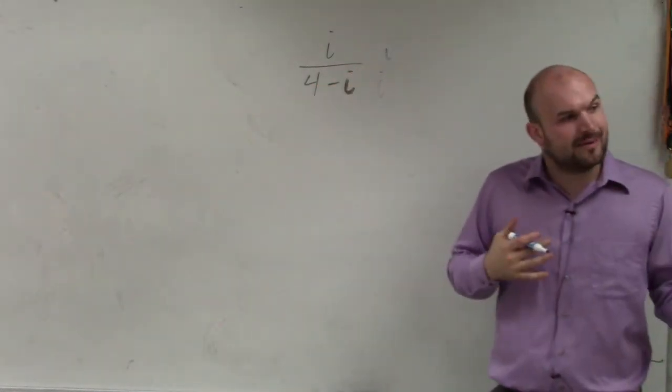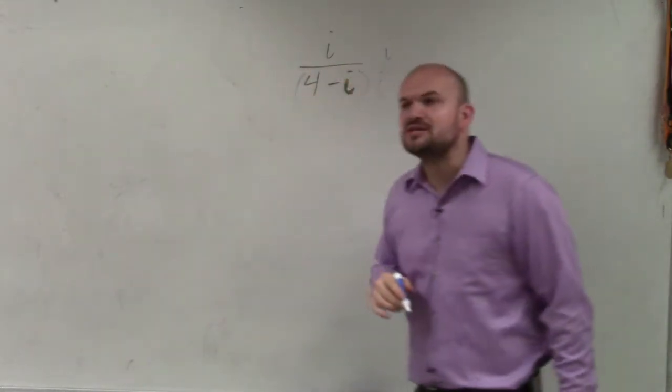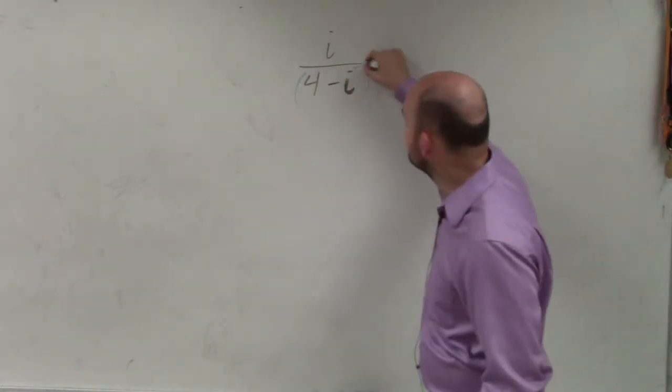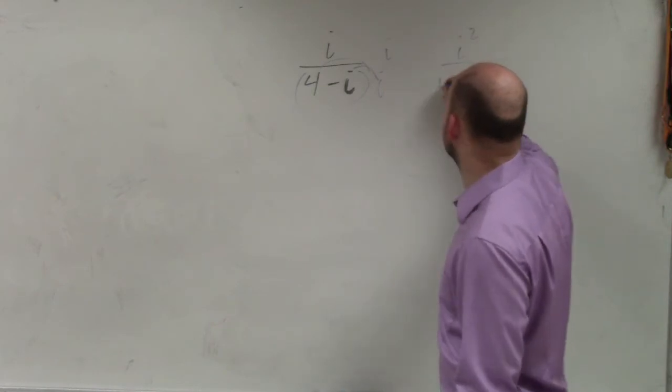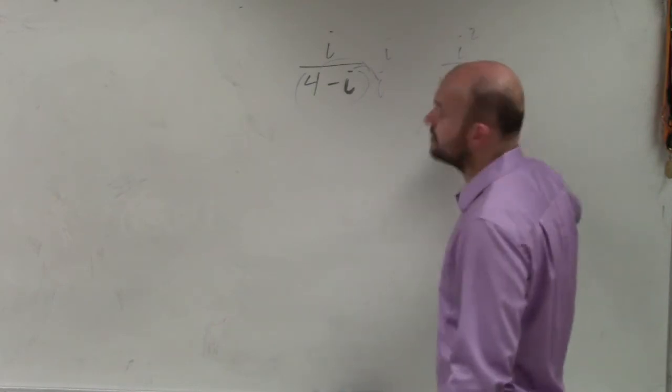But the problem when we multiply by i over i when we have a binomial or an expression in the denominator is you have to apply distributive property. So you'd get i squared in the numerator, and you'd get 4i minus i squared in the denominator.